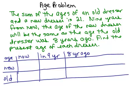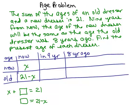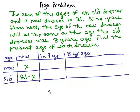The first piece of information: the sum of the ages of an old dresser and a new dresser is 21. Right now we know these ages add up to 21 and I don't know either age. So let's let one of them be X. If the new dresser is X years old, then the old one must be 21 minus X, because X plus 21 minus X equals 21. You could have let X be the age of the old dresser — one of them is X and the other will be 21 minus X.